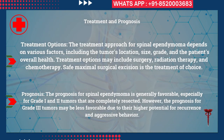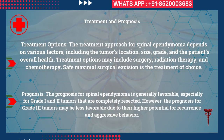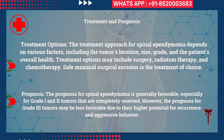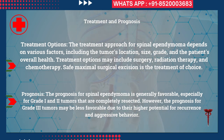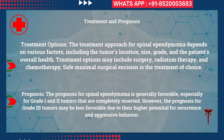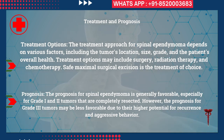The treatment approach for spinal ependymoma depends on various factors including the tumor's location, size, grade, and the patient's overall health. Treatment options may include surgery, radiation therapy, and chemotherapy. Safe maximal surgical excision is the treatment of choice.